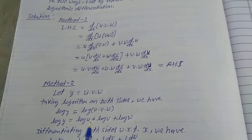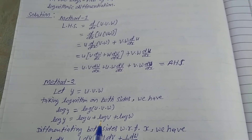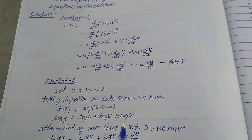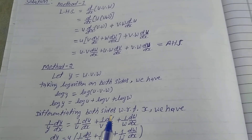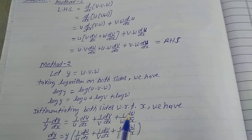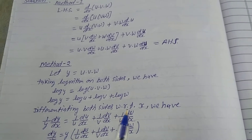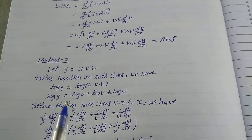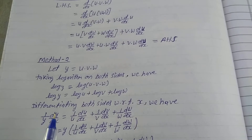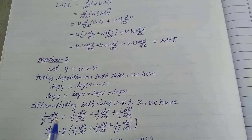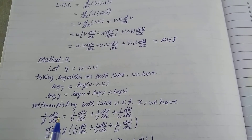Using log properties: log(y) = log(u) + log(v) + log(w). Now differentiating both sides with respect to x. The derivative of log(y) is 1/y · dy/dx.